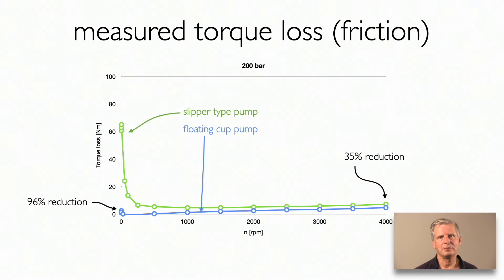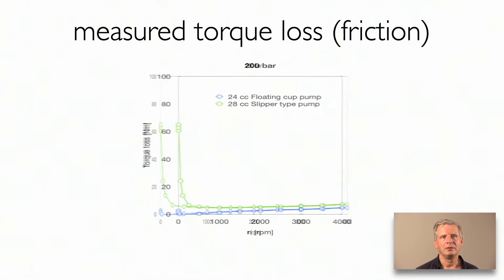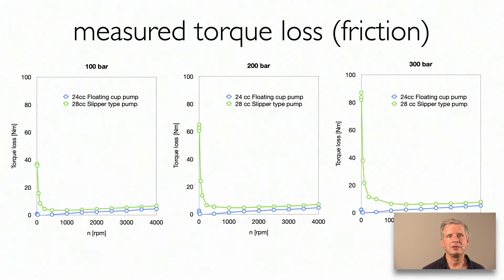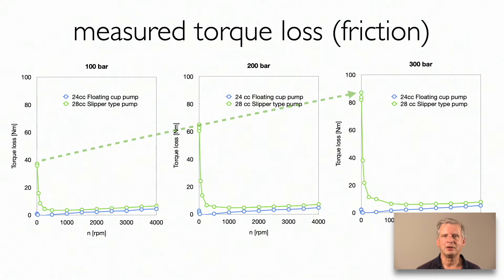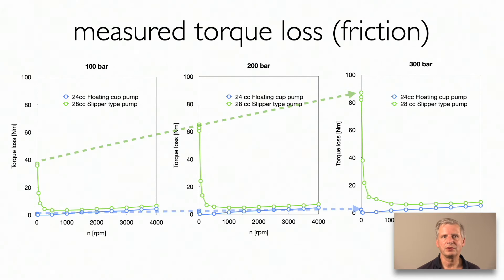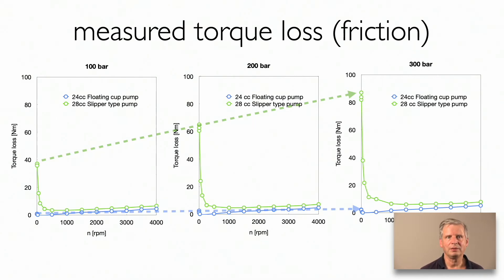The mixed lubrication and the boundary lubrication have almost completely disappeared. These measurements are performed at a pump pressure of 200 bar. Similar results can be seen at pump pressures of 100 bar and 300 bar. But where the friction strongly increases for the slipper type unit, the friction for the floating cap pump stays almost constant at a very low level.